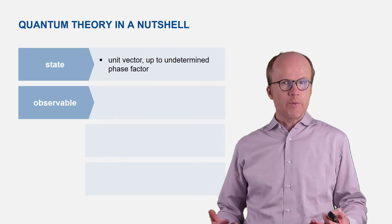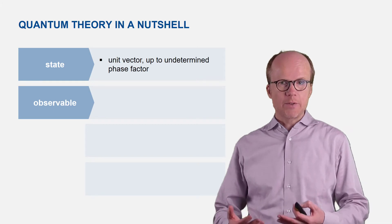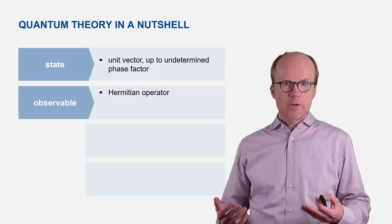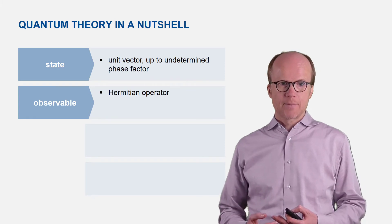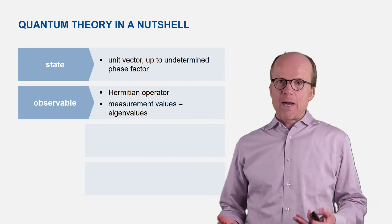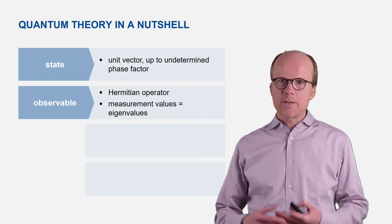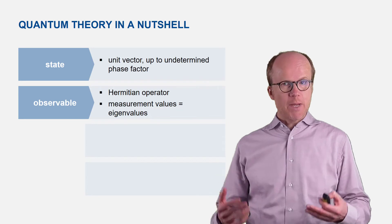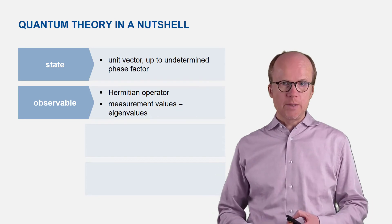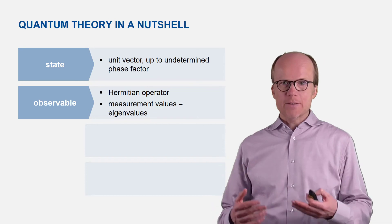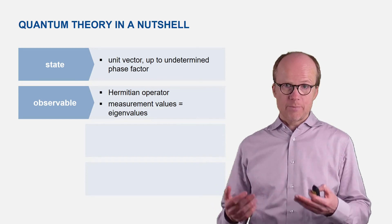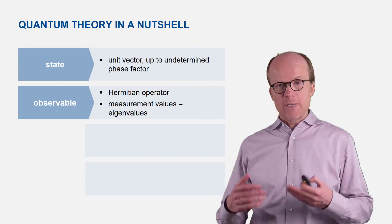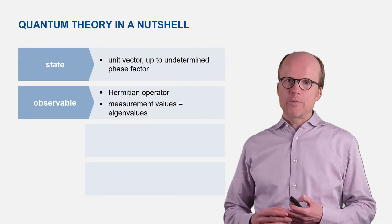Next, an observable — that is, a physical quantity that you can measure — is described by a Hermitian operator. The eigenvalues of this Hermitian operator correspond to the possible measurement values. So if you perform a measurement of this particular observable, the possible results you can obtain are the eigenvalues of the corresponding Hermitian operator.